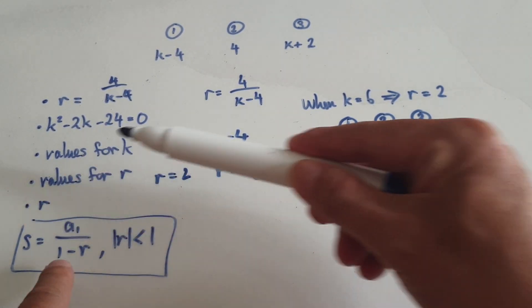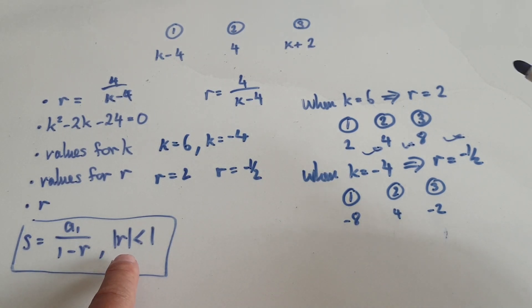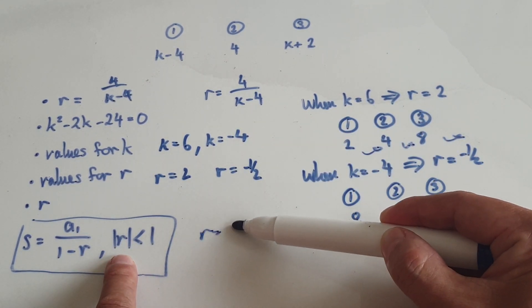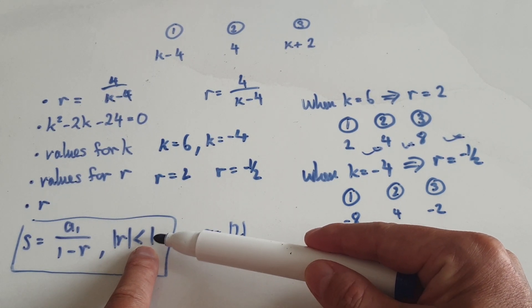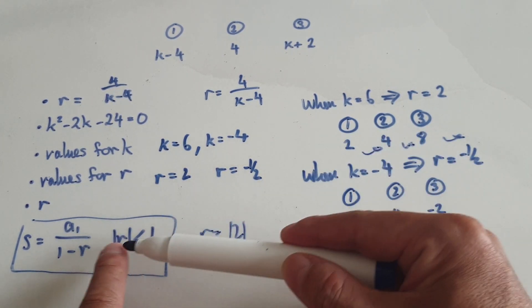The formula for the sum of the sequence is given by this, which I'm expecting you to know. You can only sum it up when r is less than 1, when the absolute value is less than 1. Here r is 2, the absolute value of 2 is actually bigger than 1, so you can't really sum it up. There is no sum.